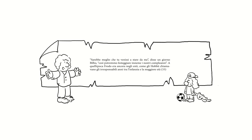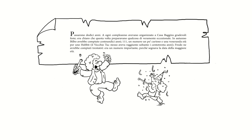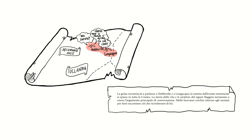Sarebbe meglio che tu venissi a stare da me, disse un giorno Bilbo, così potremmo festeggiare insieme i nostri compleanni. A quell'epoca Frodo era ancora negli 'enti', come gli Hobbit chiamavano gli irresponsabili anni tra l'infanzia e la maggiore età: 33 anni. Passarono 12 anni; a ogni compleanno avevano organizzato a Casa Baggins gradevoli feste. Era chiaro che questa volta preparavano qualcosa di veramente eccezionale: in autunno Bilbo avrebbe compiuto 111 anni, un numero un po' curioso e una veneranda età per un Hobbit. Frodo ne avrebbe compiuti 33, un numero importante perché segnava la data della maggiore età. La gente incominciò a parlarne a Hobbiville e a Lungacque; la notizia dell'evento imminente si sparse in tutta la Contea.